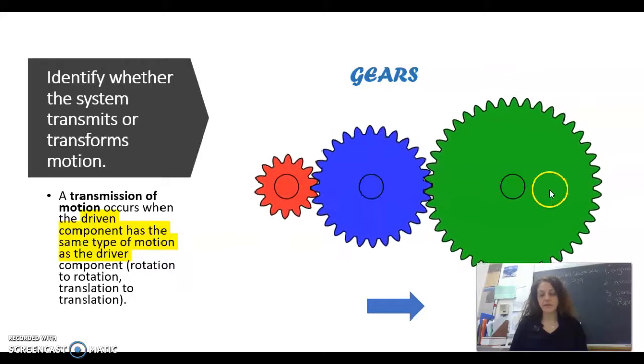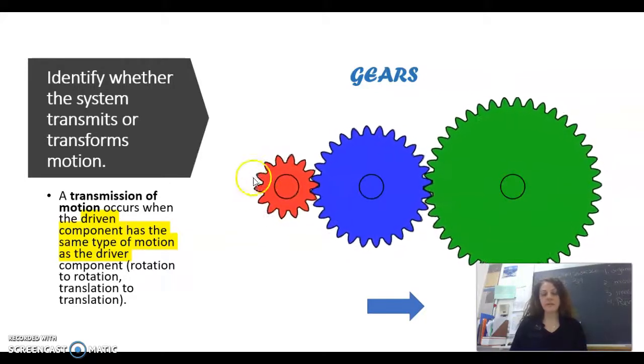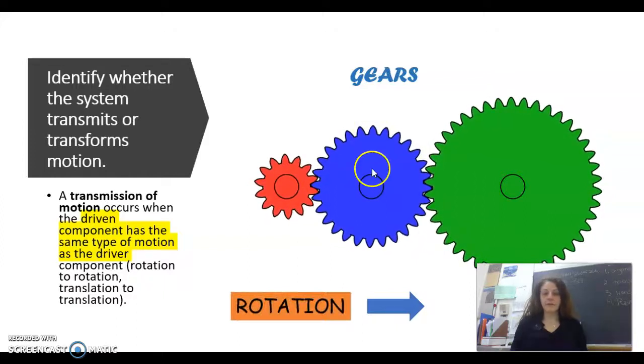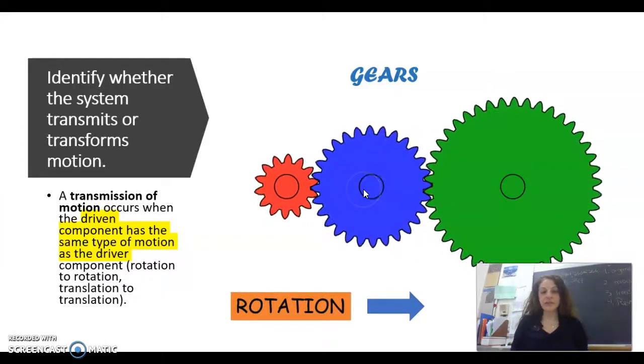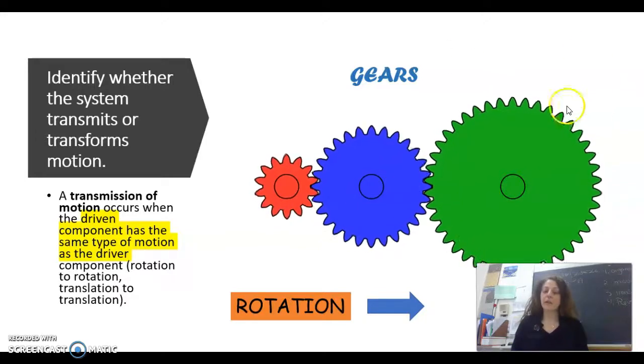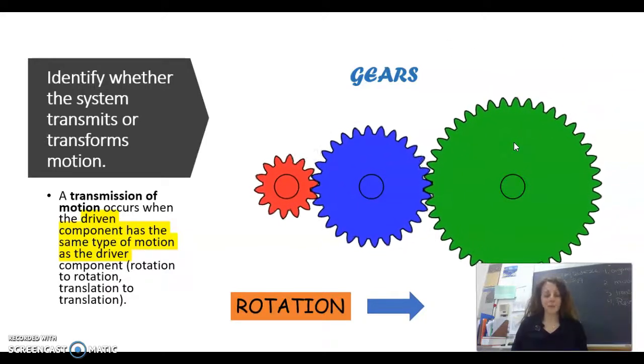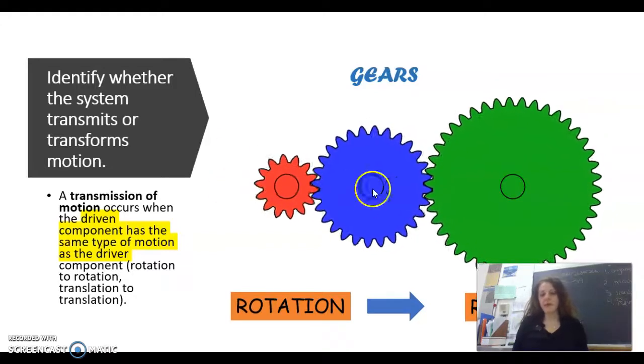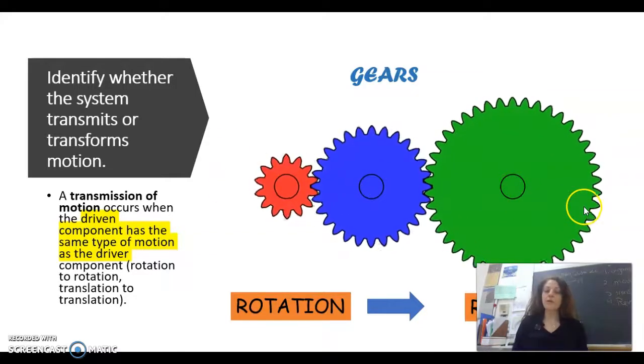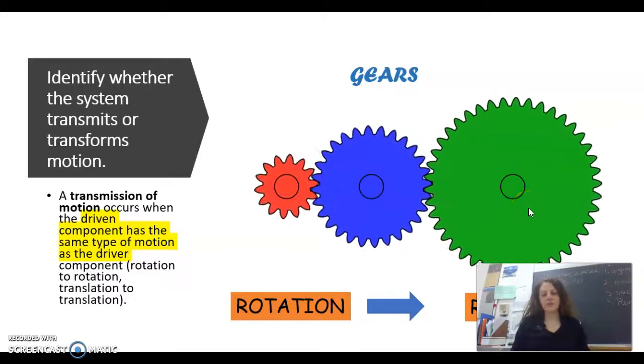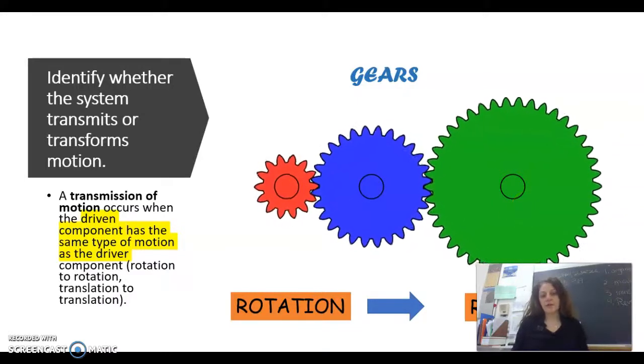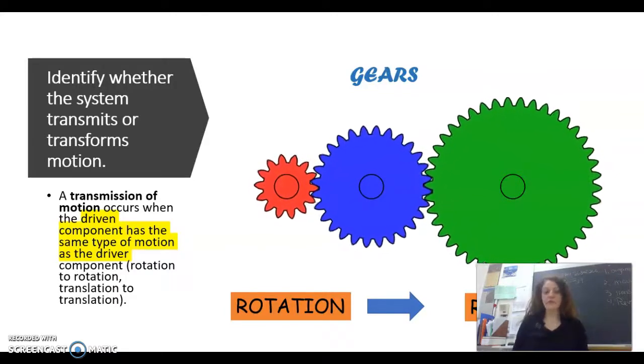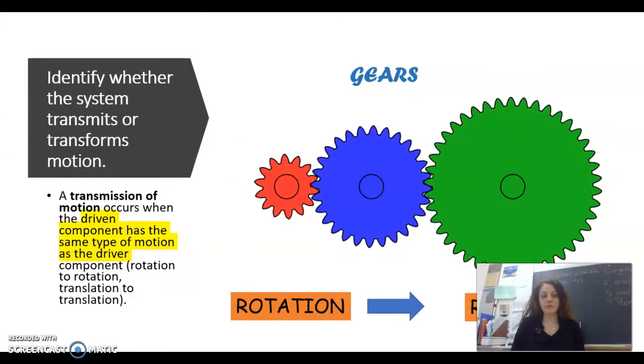If we take a minute and look at those gears, as you can see the first one is rotation, let's say this middle one is the intermediate gear also rotation, and the last one rotation as well. Because the rotation remains all throughout the system we call this a transmission of motion, because all that's happening is that rotation is going from one to the next and there is no change in the motion.